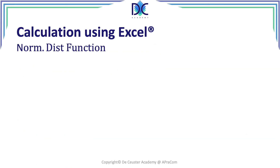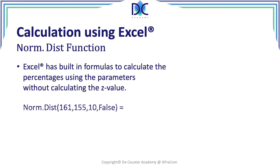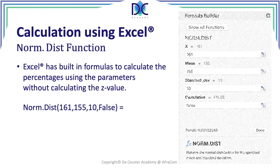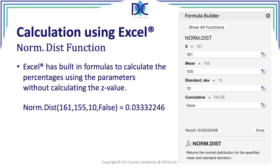Let's have a look at the NORM.DIST function. Here we don't have to calculate the Z value, so we fill in the numbers directly in the formula. When you click on 'f(x)' in the Excel sheet, you will find the formula builder, where you can enter the values: X = 161, mean = 155, standard deviation = 10. Here I select false, and at the bottom you immediately see the result. We can also reference cell coordinates from the Excel file, and we see the same result: 0.033332246.